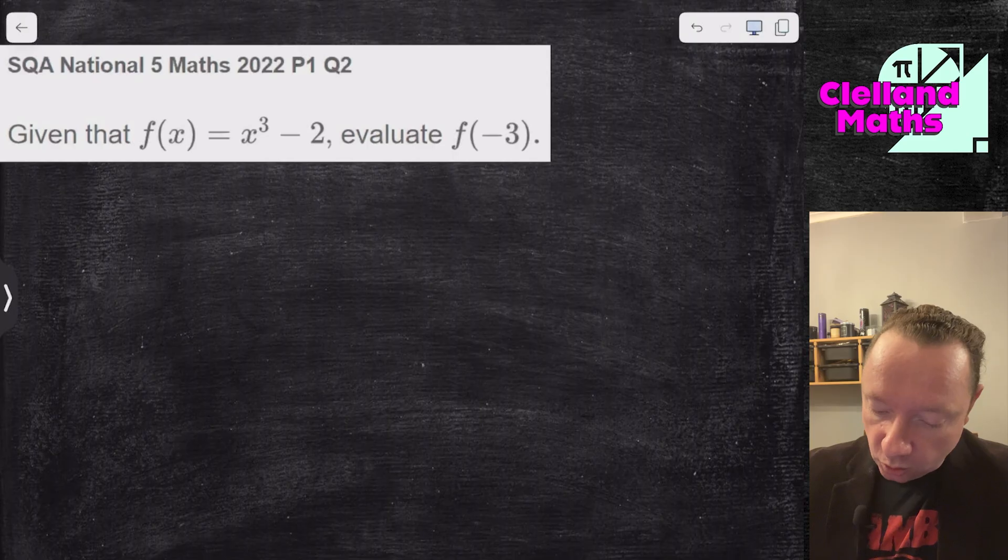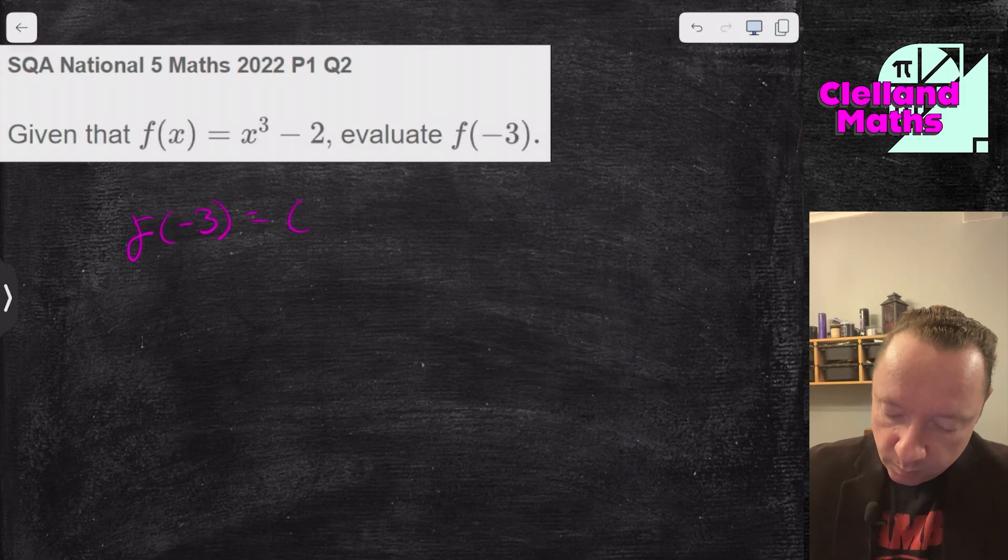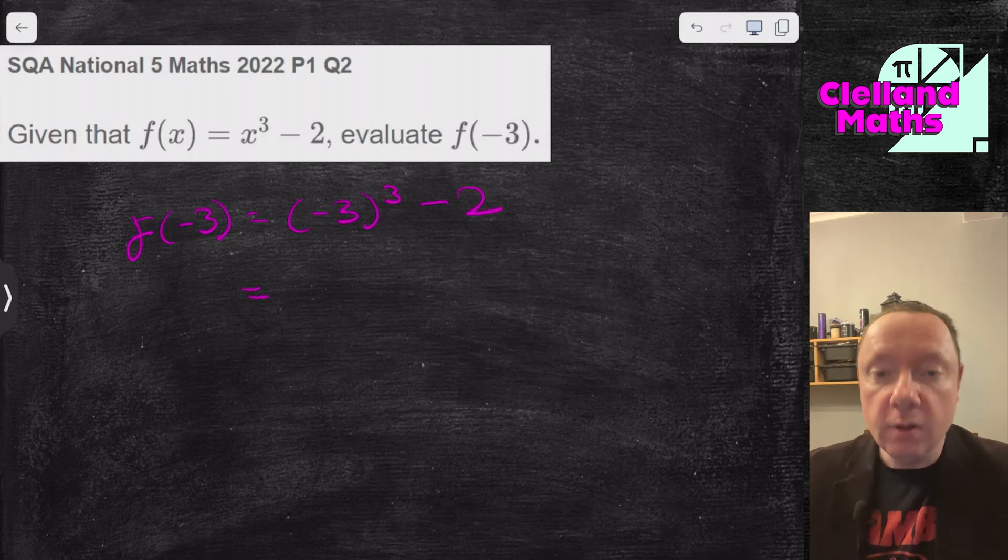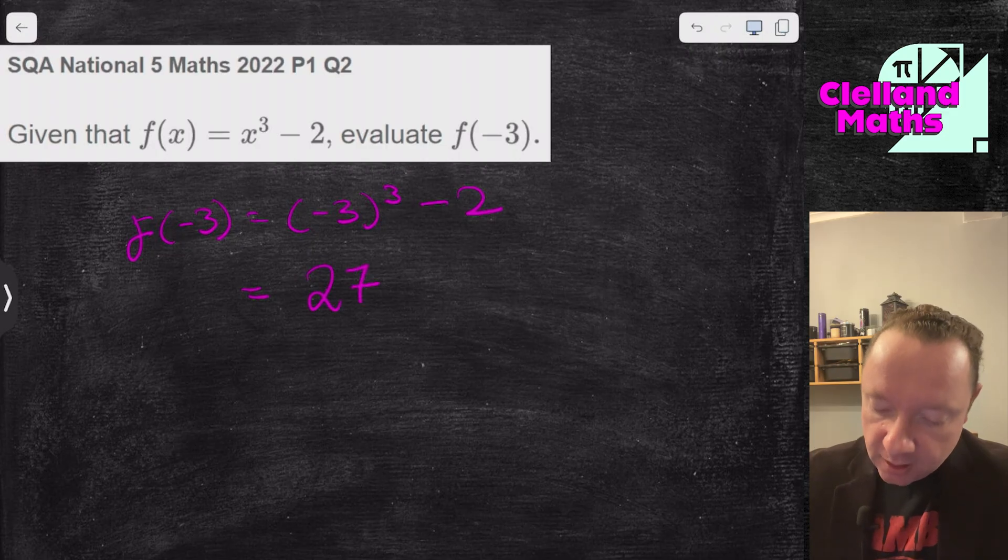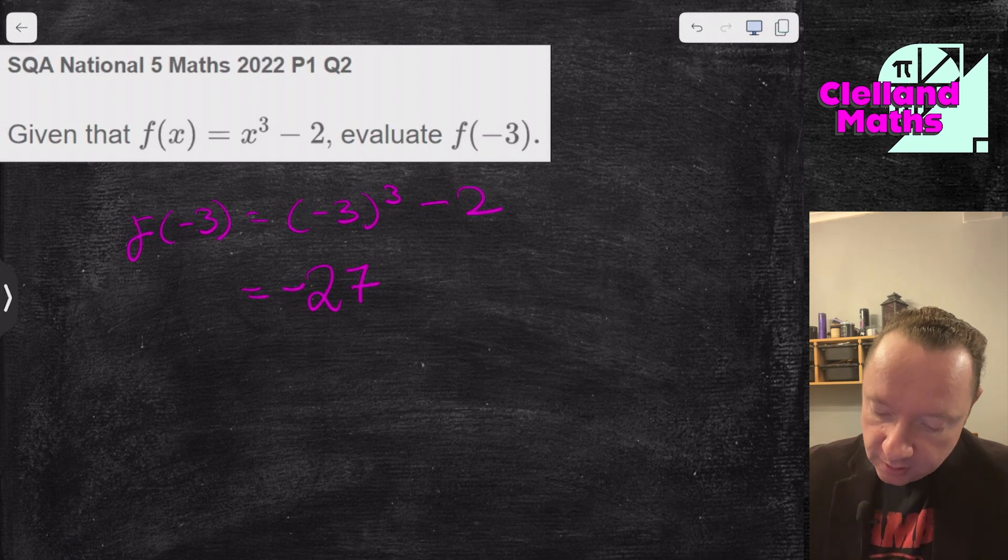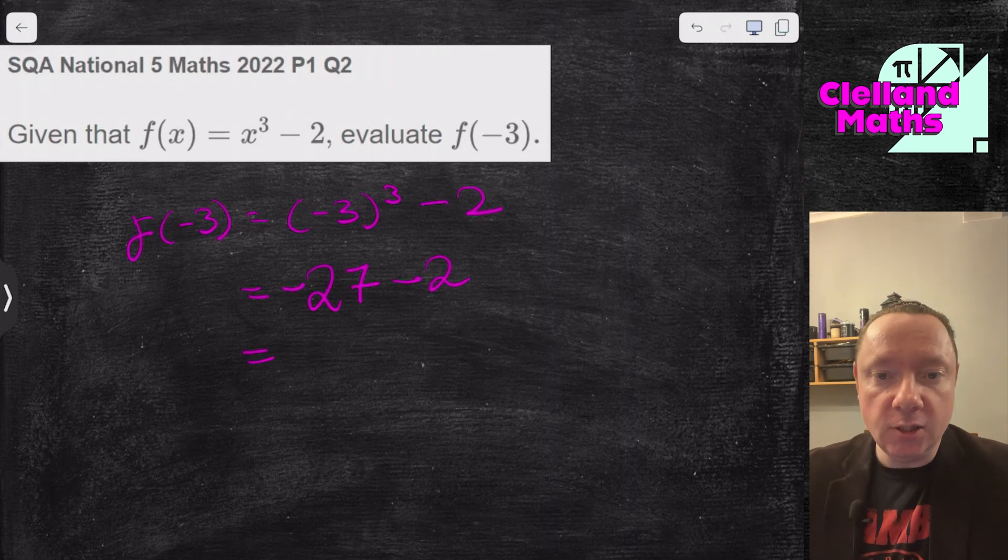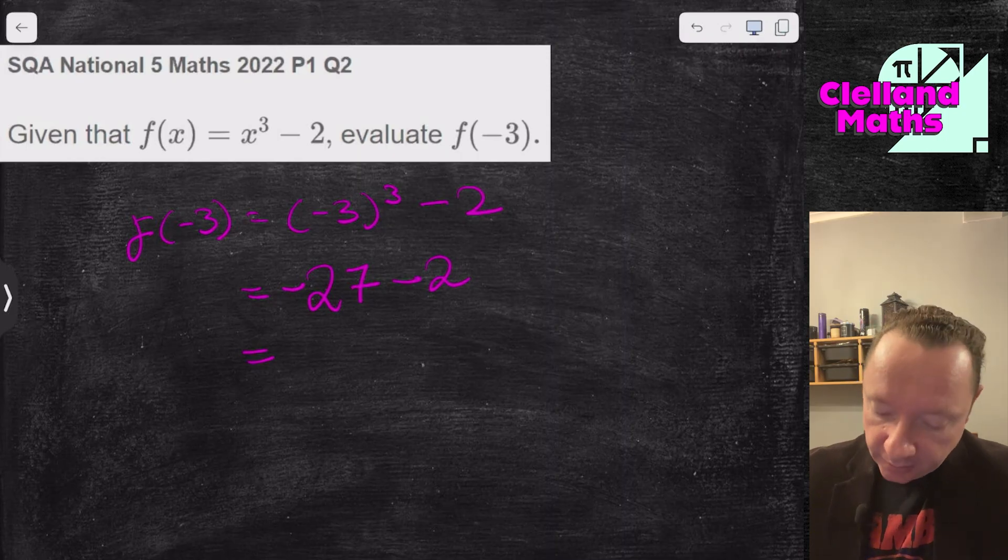This will be National 5 Maths 2022 Paper 1 Question 2. f of x is x cubed minus 2. Evaluate f of minus 3. f of minus 3 is minus 3 cubed take away 2. Cubed means times back 3 times back 3 again. 3 times 3 is 9 times 3 is 27. Minus times a minus is a plus, then times a minus again. So it's a minus. Minus 27, take away 2. Negative numbers, minus 27 take away 2 is minus 29. So I'm going away from 0. Minus 29 is the answer.